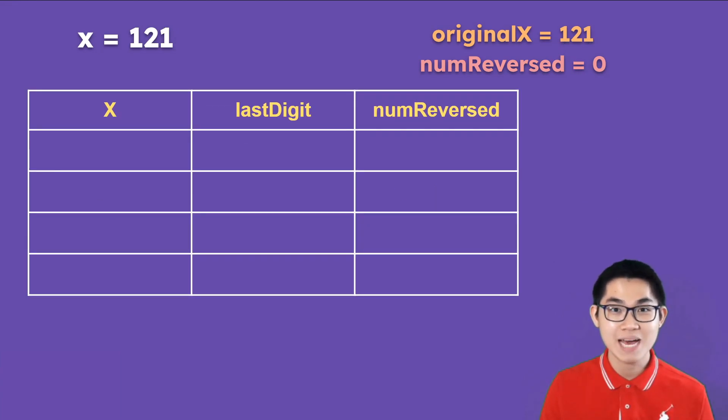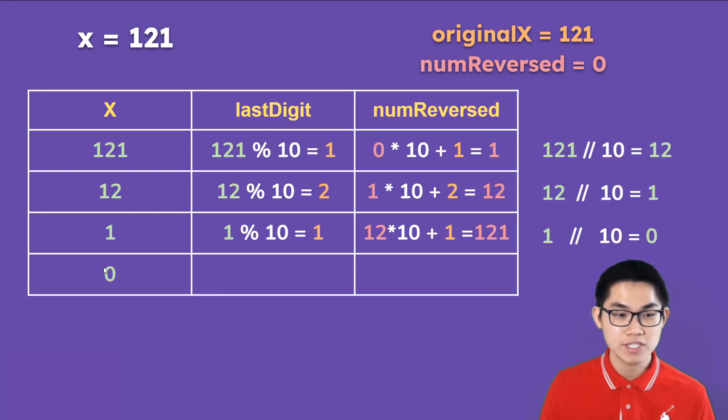Let's do one more example. So what if x is 121? You fill up this table. And once you reach 0, you look at the last value for num reverse. And you see that num reverse is 121, which is the same as the original x. And this indicates that 121 is indeed a palindrome number.